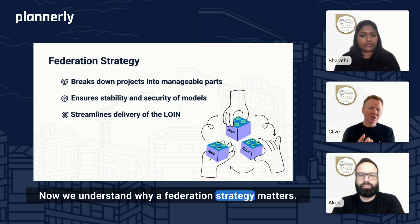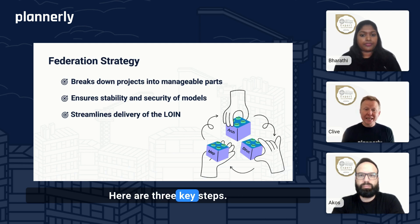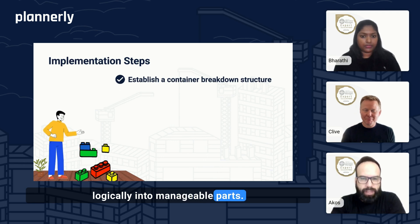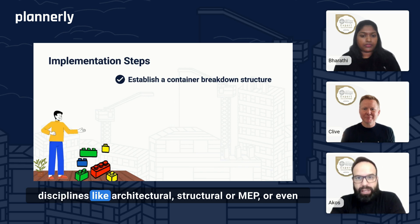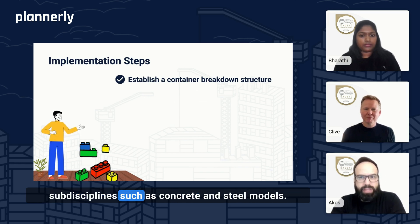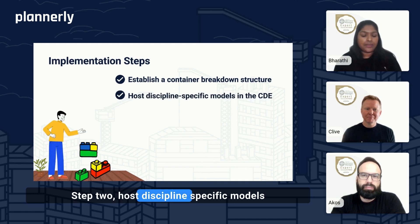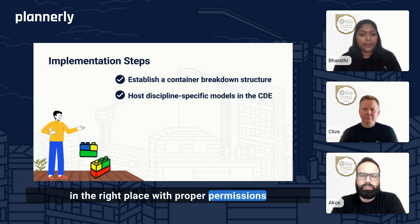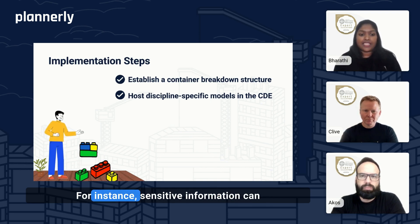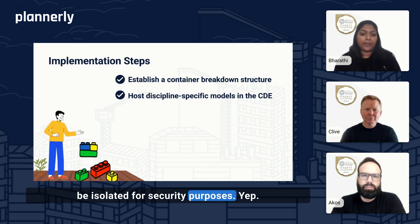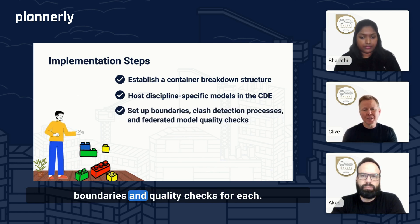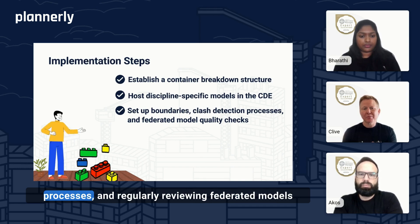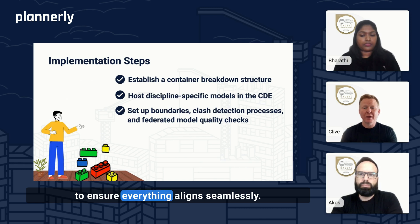Now we understand why a federation strategy matters — let's see how to implement it. Here are three key steps. Step one: establish a container breakdown structure, dividing your models logically into manageable parts, for example by buildings, disciplines like architectural, structural or MEP, or even sub-disciplines such as concrete and steel models. Step two: host discipline-specific models in the common data environment, ensuring every model is kept in the right place with proper permissions and access control, with sensitive information isolated for security. Step three: set up boundaries and quality checks for each task team, implementing clash detection processes, and regularly reviewing federated models to ensure everything aligns seamlessly.